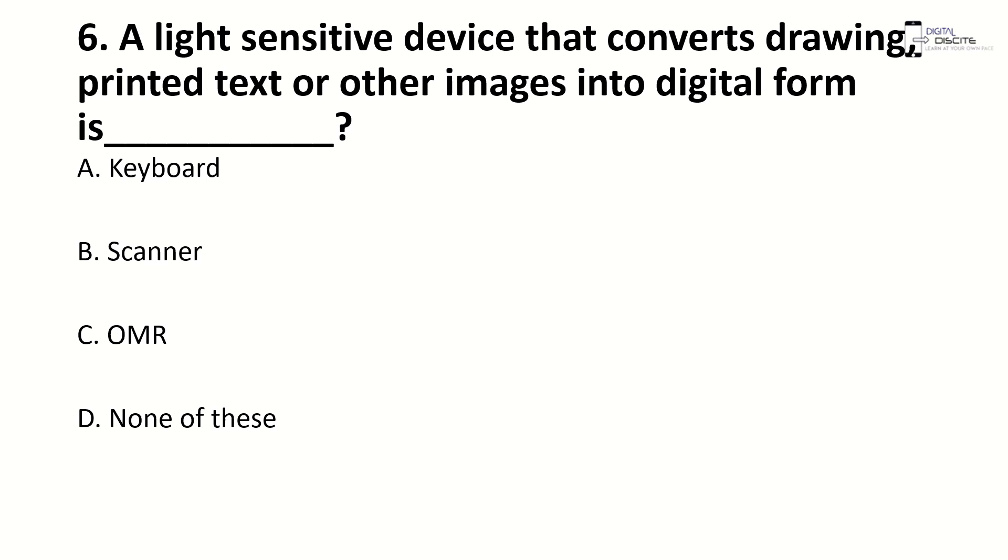A light sensitive device that converts drawing, printed text or other images into digital form is called... Right answer is B. Scanner. This can also be keyboard or OMR.